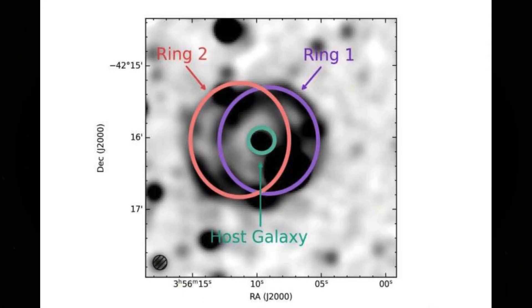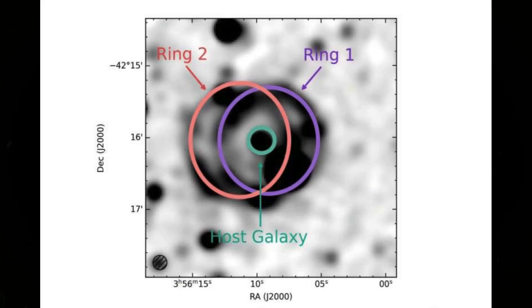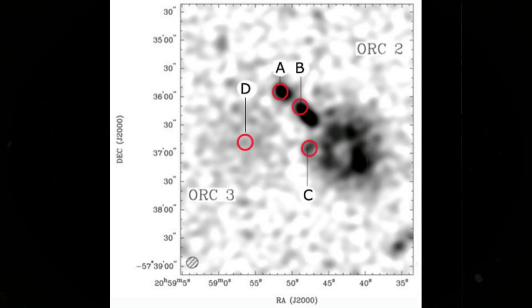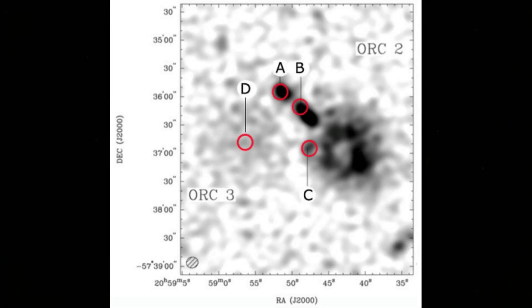These are colossal loops of radio energy discovered less than a decade ago, each spanning up to two million light-years. They look like smoke rings drifting through intergalactic space, though what could blow such rings is still a matter of fierce debate. Supernovae are too small. Black hole jets are powerful but don't match the shape. Galaxy mergers might do it, but not on this monstrous scale.